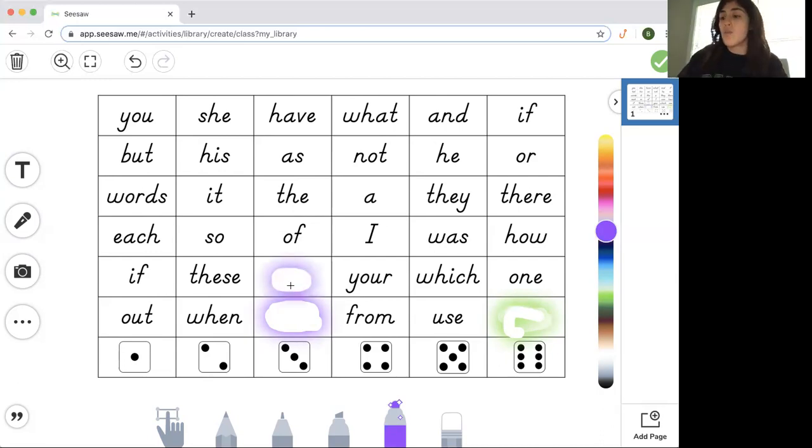And I'm going to roll one more time. I got the number 1. Let me find the number 1. Here's the number 1. And I'm going to look right above it and read that one word: 'out'. And I'm going to choose a color to color it.